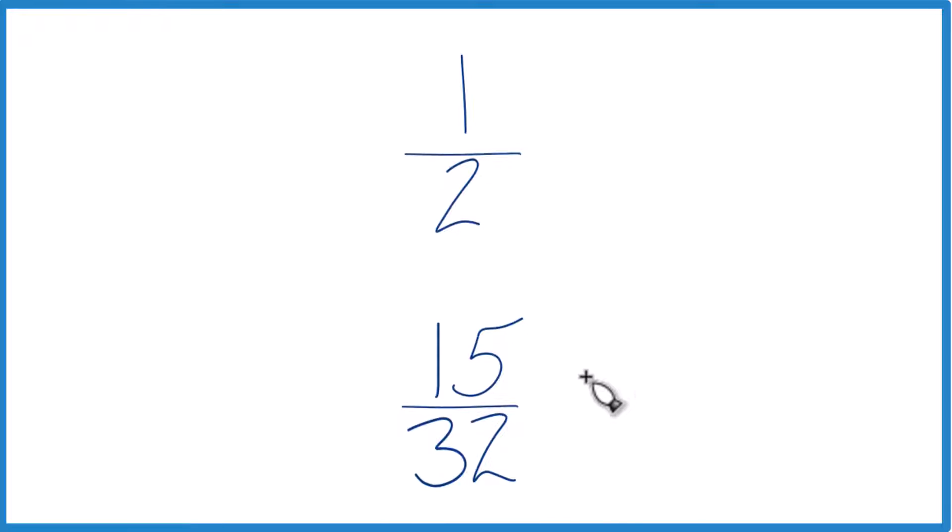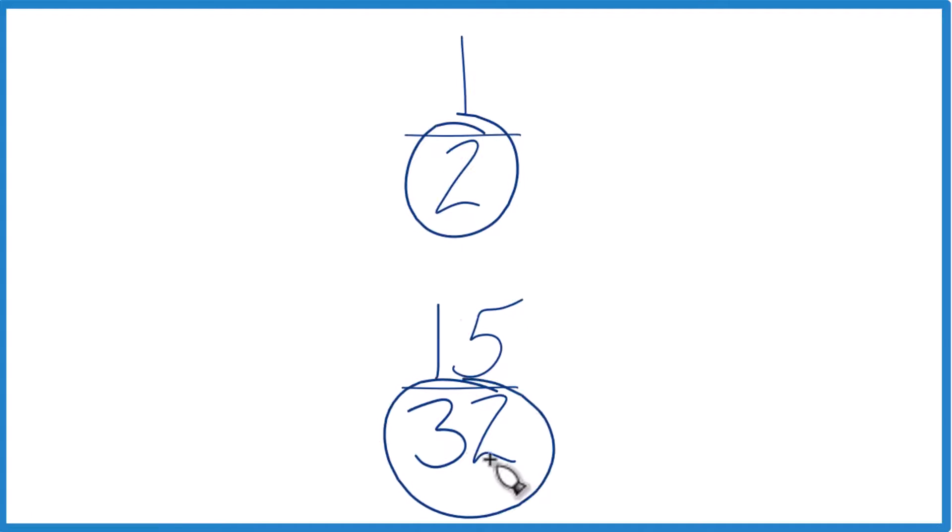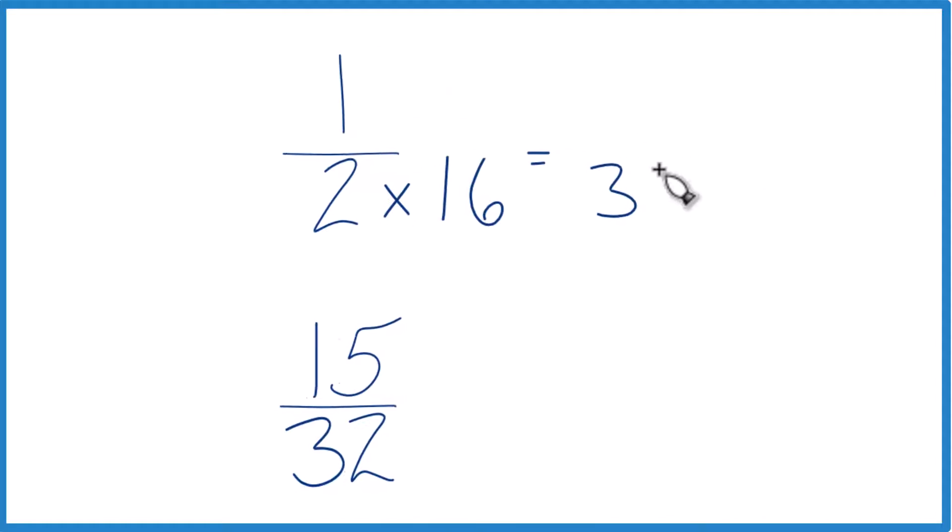You could also try to find a common denominator, something that 2 and 32 go into evenly. So let's see, 32 and 2, why don't we multiply 2 times 16? Because that would give me 32.